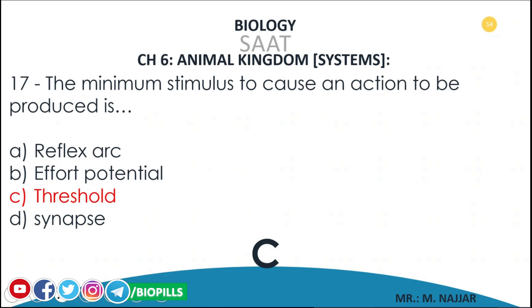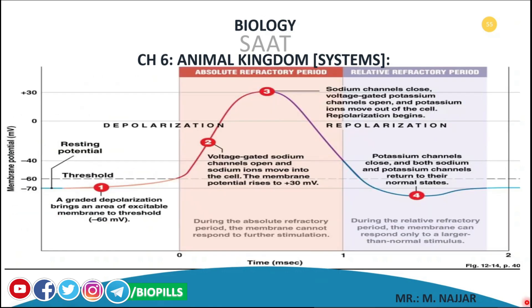What is the meaning of it? Let's extend our explanation. If we are looking here, there is the threshold — for example, supposed to be +30 millivolts. If it's less than this, there will not be any detection or action potential. This is the resting potential. So a great depolarization brings an area of excitable membrane to threshold.